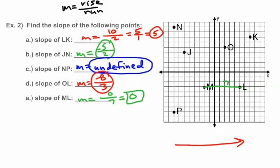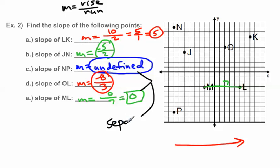When it comes to undefined slope and slope of 0, I have a separate video titled 'Slope 0 versus Undefined Slope' — you can search for it. I hope this video helps explain the concept of rise over run. Have a good day, bye-bye!